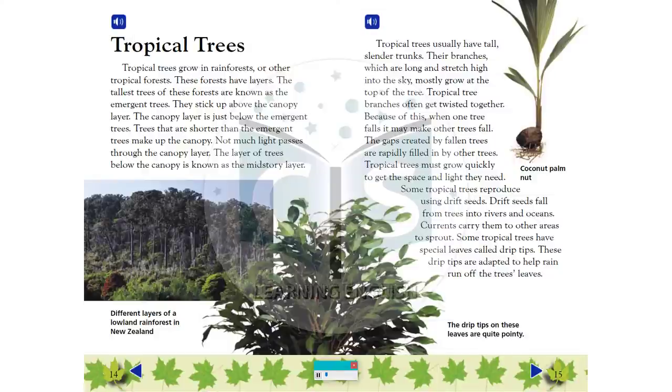Tropical trees usually have tall, slender trunks. Their branches, which are long and stretch high into the sky, mostly grow at the top of the tree. Tropical tree branches often get twisted together. Because of this, when one tree falls, it may make other trees fall. The gaps created by fallen trees are rapidly filled in by other trees.